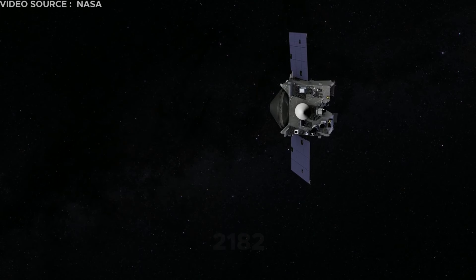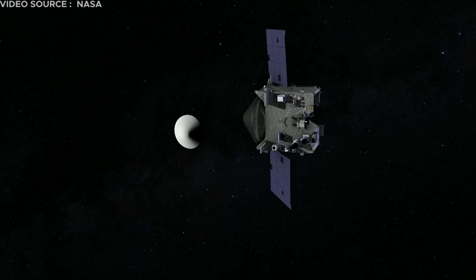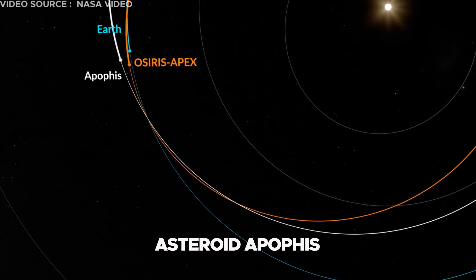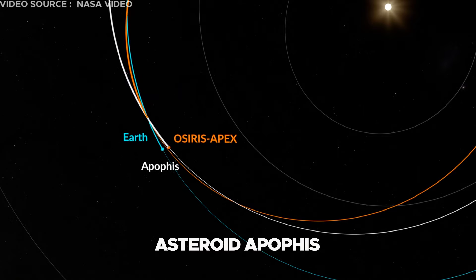To further space exploration efforts, the spacecraft, having completed the Bennu mission, has been redirected to asteroid Apophis for another round of sample collection.